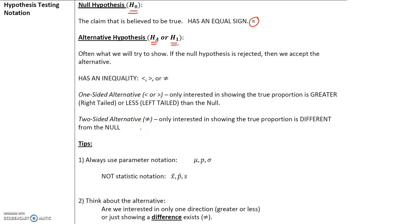Here are some tips. Because we're testing a claim about a parameter, always use parameter notation: if you have a mean use mu, if you have a proportion use p, and for standard deviation use sigma — not statistic notation. Also think about the alternative: are we interested in only one direction (greater than or less than) or just showing that a difference exists (not equal to)?